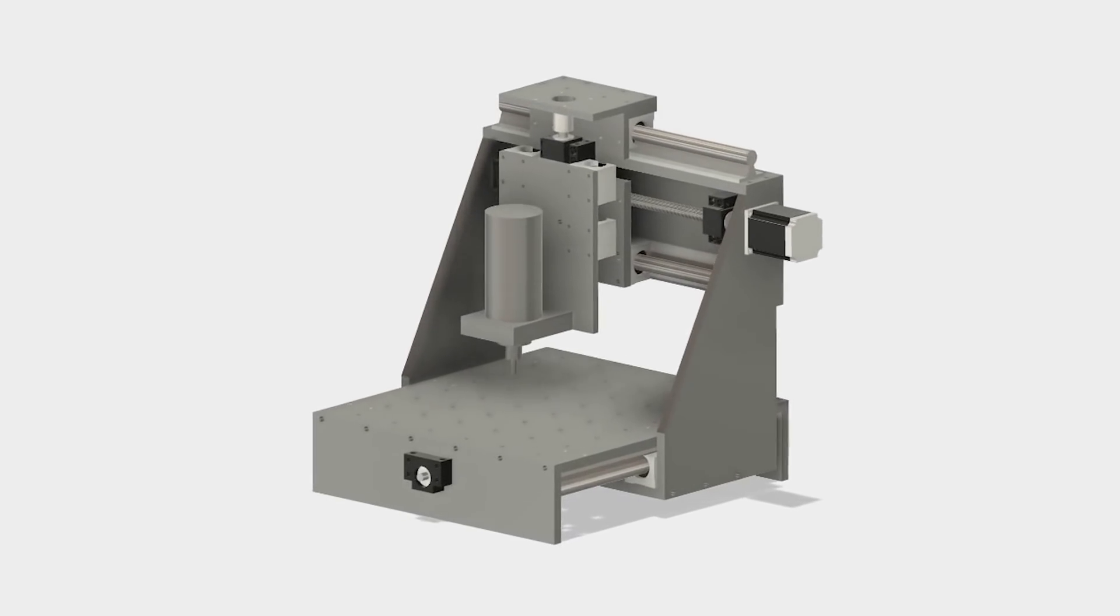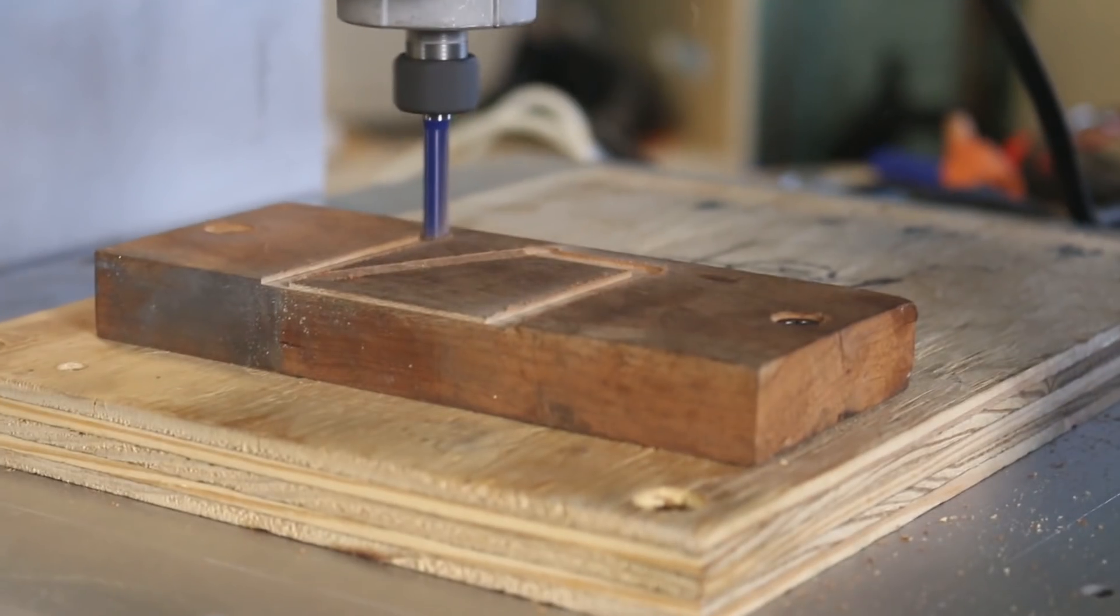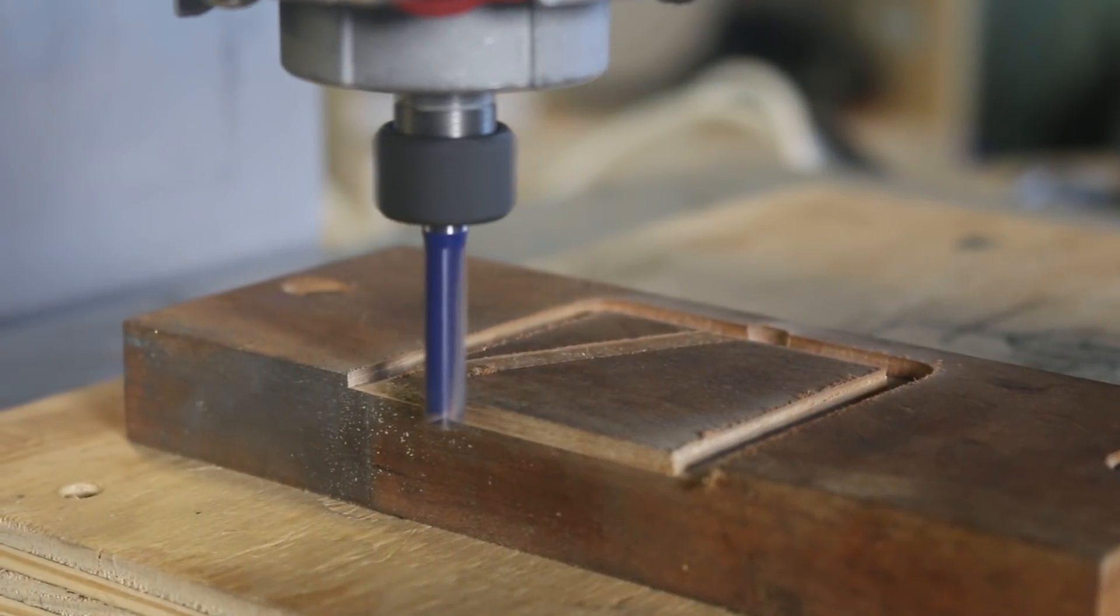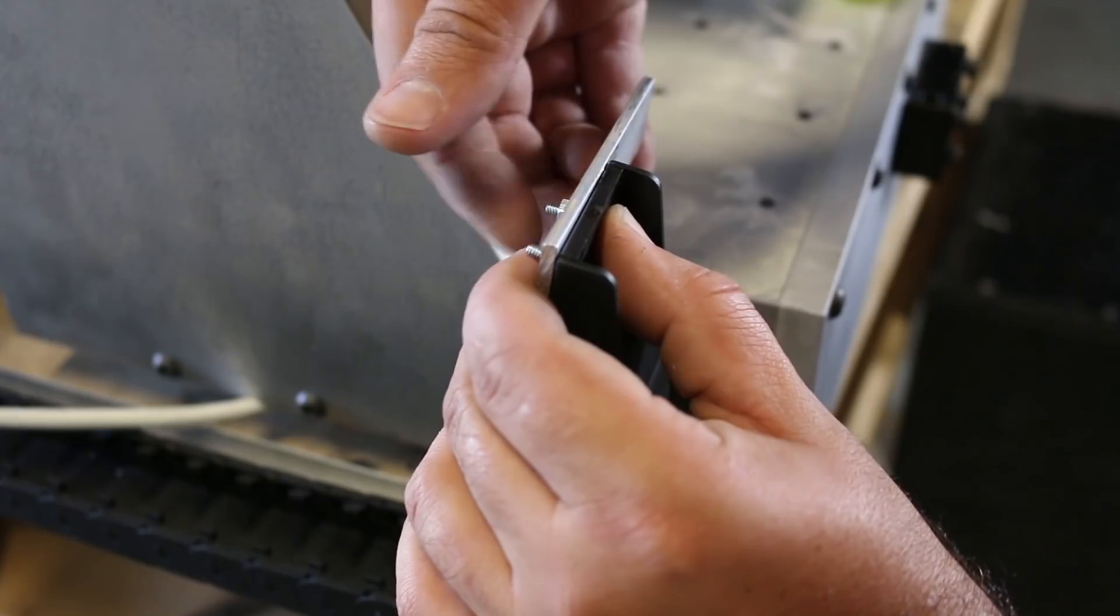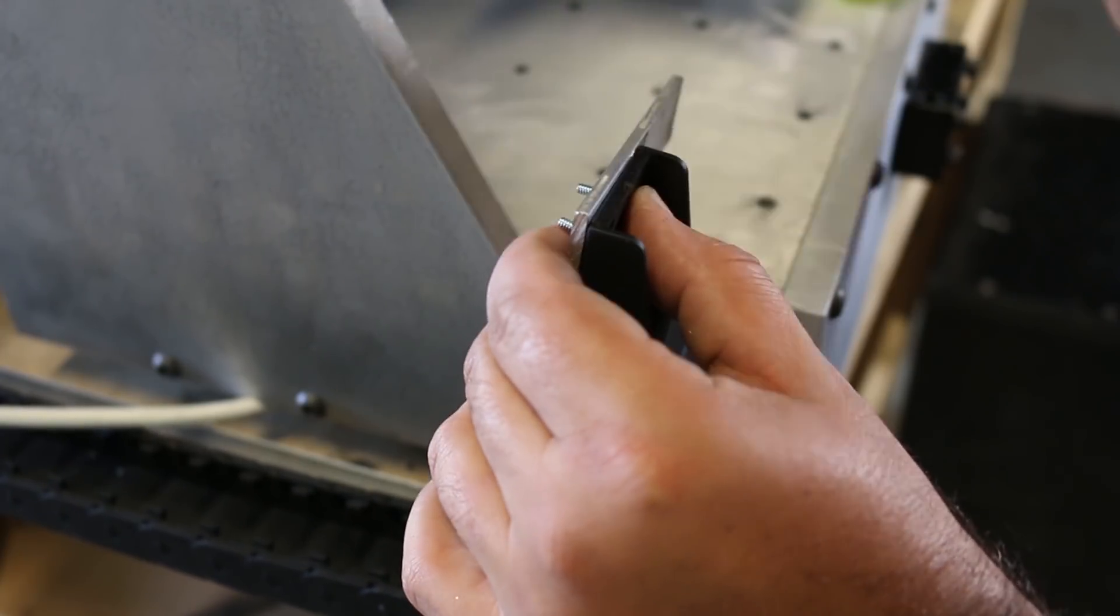In this five-part series we're going to go from this to this. It's a CNC machine of my own design which I'm calling the Stupid Strong CNC. In this video we're going to tidy up the wires and make our first cuts.